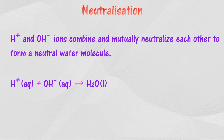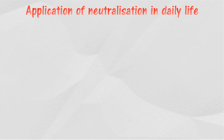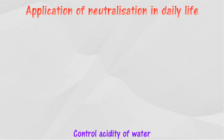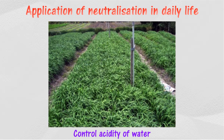In general, the neutralization process can be summarized by the following ionic equation. Neutralization principles can be applied in daily life. Lime, consisting of calcium oxide which produces calcium hydroxide in water, is used to control the acidity in aqua farming. Lime or calcium carbonate is used to neutralize acidic soil.